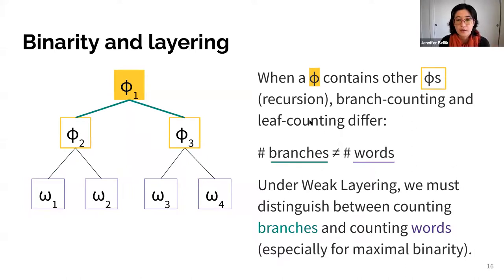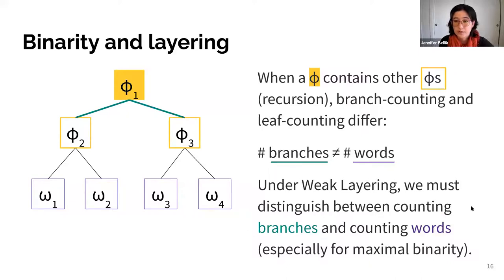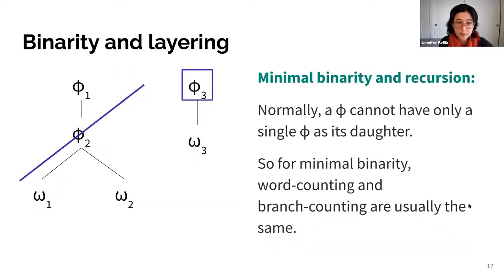When you admit recursion or non-exhaustive parsing to the candidate set, important differences arise. When a phi contains other phis, branch counting and leaf counting binarity will pull apart — a phi may have two branches but contain four words. Under weak layering, it's important to distinguish between counting branches and counting words, especially for maximal binarity. Typically it doesn't matter as much for minimal binarity, since we don't normally permit vacuous recursion where a phi's only daughter is another phi. I'll set aside minimal binarity for now.